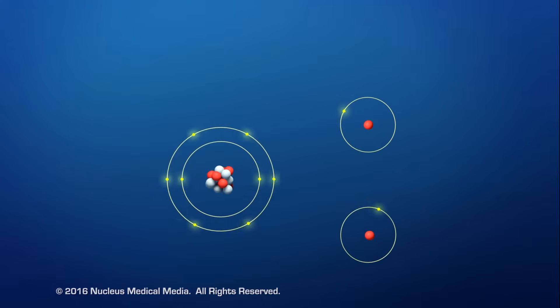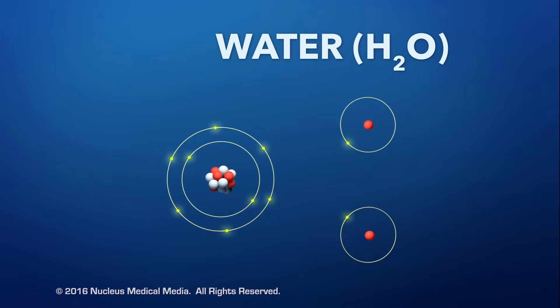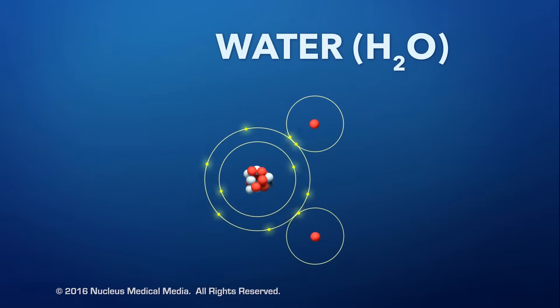Let's look at an example of a polar molecule, water. A water molecule, or H2O, consists of two hydrogen atoms and one oxygen atom. When a water molecule forms, both hydrogen atoms bond with the oxygen atom by sharing their electrons with the oxygen atom.